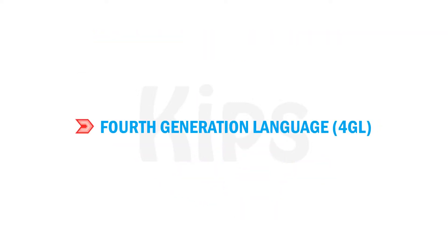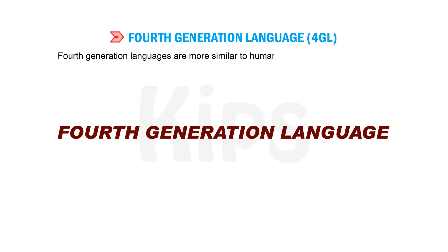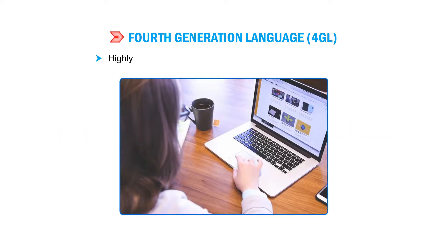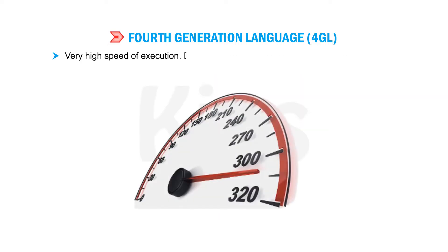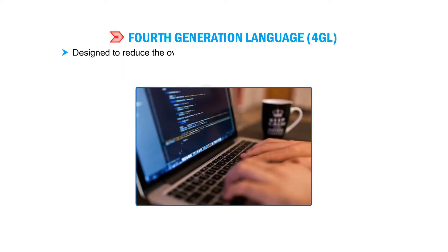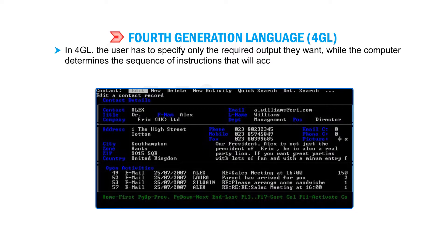Let us now talk about the fourth generation language, 4GL. Fourth generation languages are more similar to human languages than their previous versions. They are a combination of languages with the following features: highly user-friendly and independent of any operating system, very high speed of execution, designed to reduce the level of programming efforts, minimum efforts from the user to obtain any information, and designed to reduce the overall time and cost of software development. In 4GL, the user has to specify only the required output they want, while the computer determines a sequence of instructions that will accomplish those results.